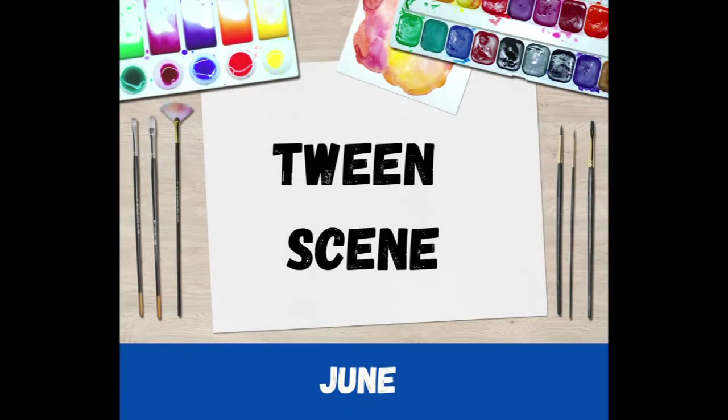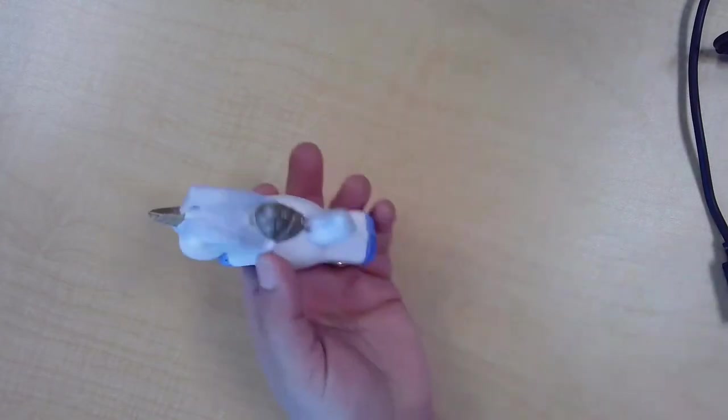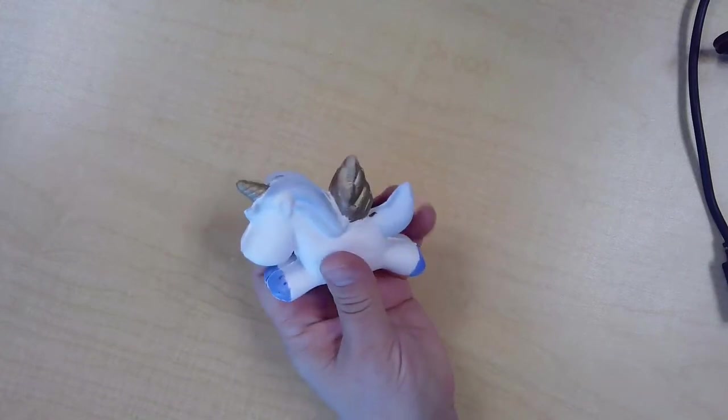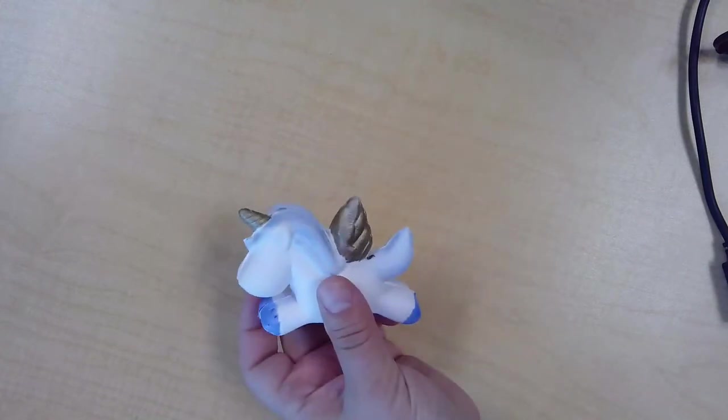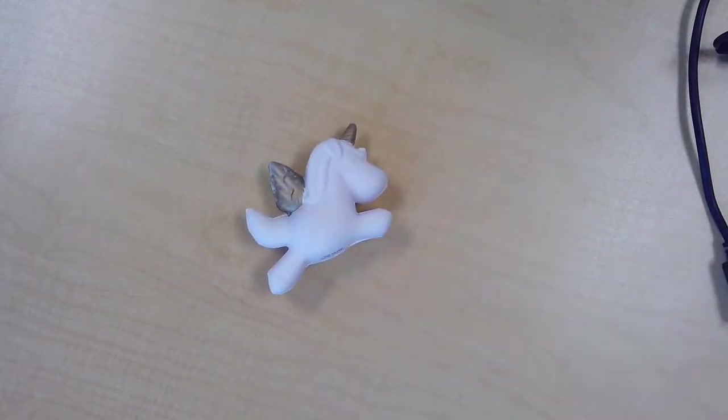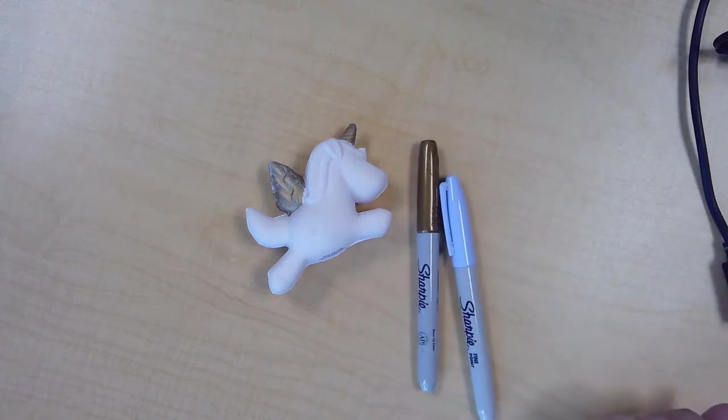Hi tweens, our last project for the month of June is going to be these cute little unicorn squishies. It doesn't take much to figure out what's going on here—it's not a complex craft, but you're going to get one plain white unicorn and a couple of Sharpie permanent markers. One will be metallic.